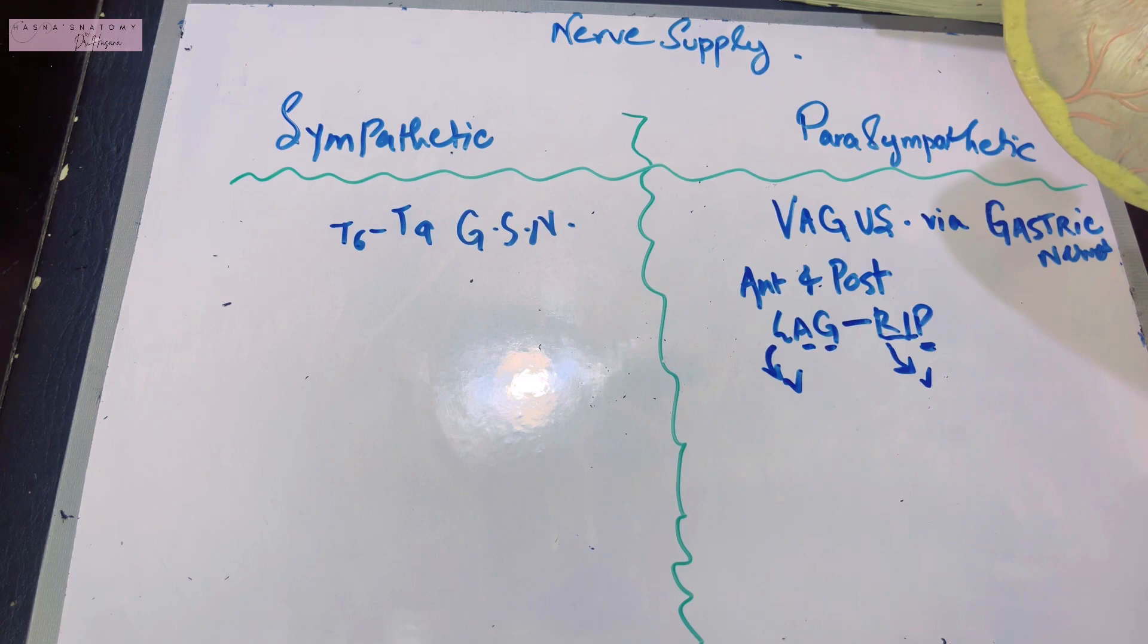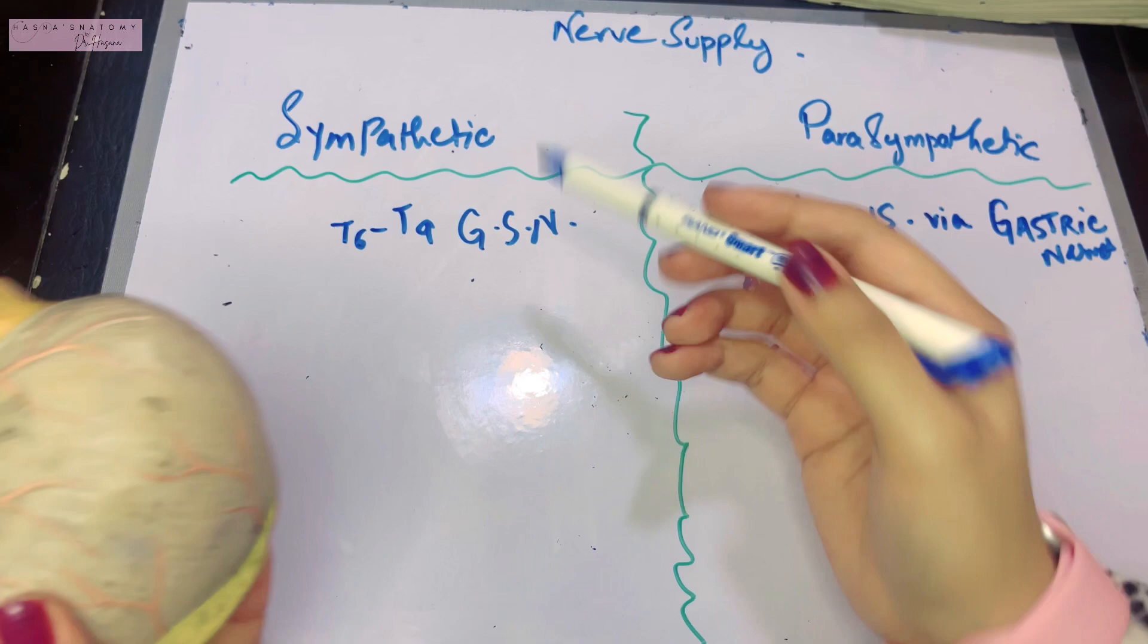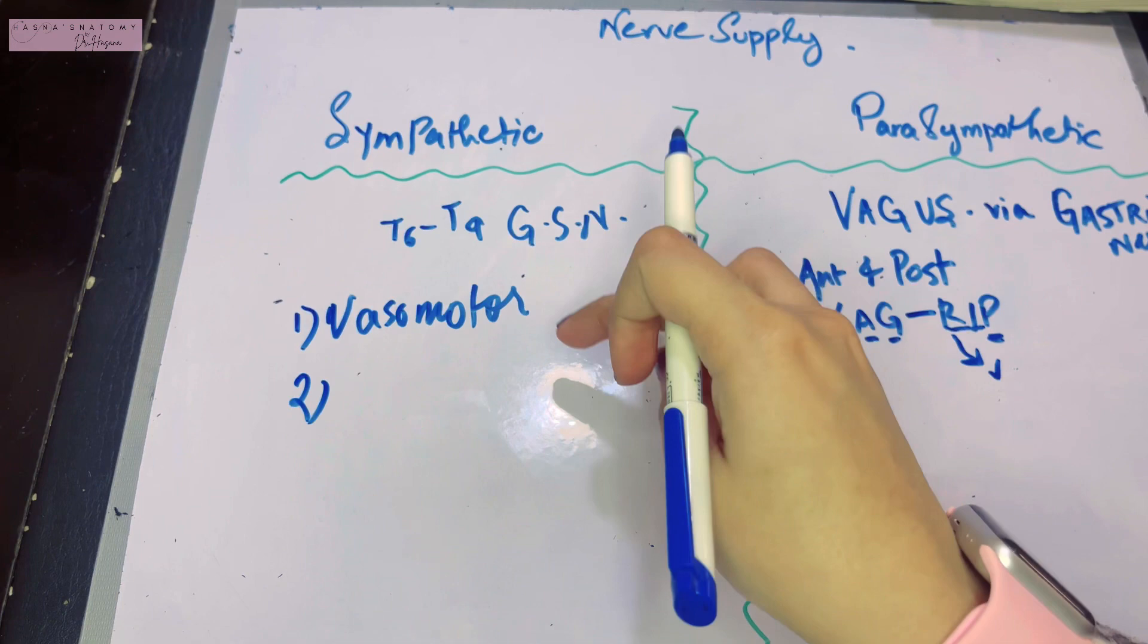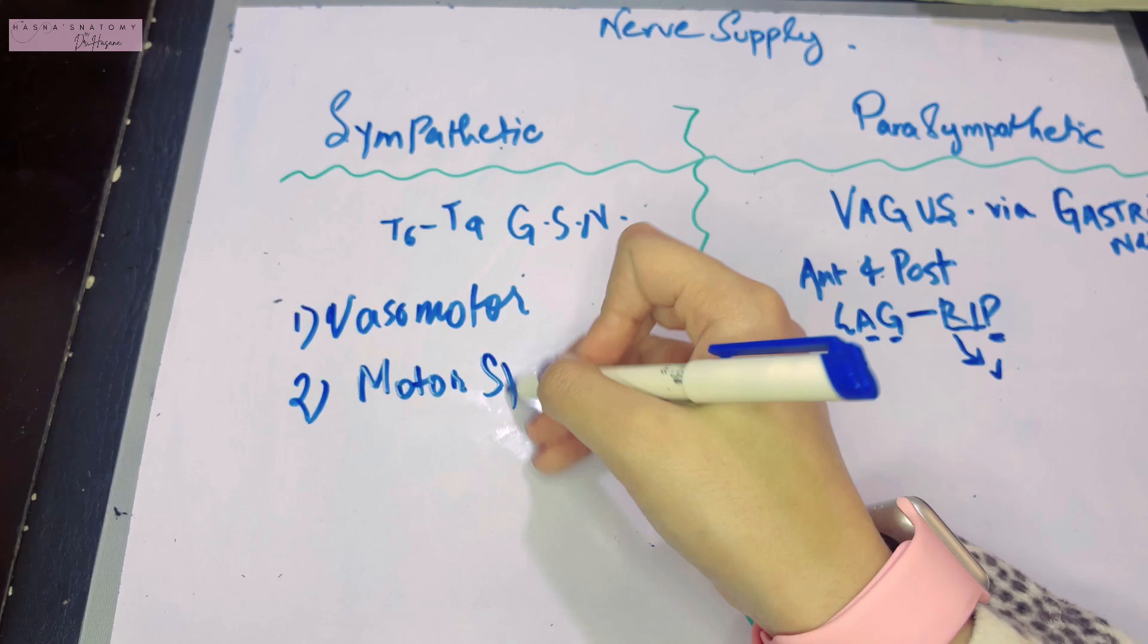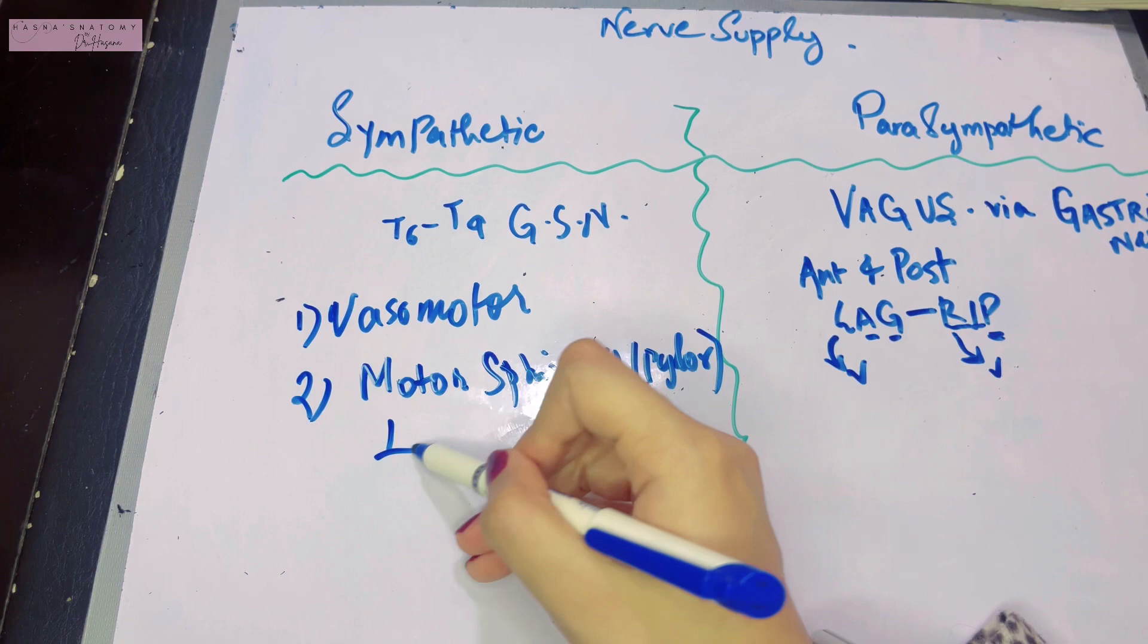Let's talk about the function of the sympathetic system. What happens when sympathetic stimulation is activated on the stomach? It is vasomotor which means it constricts the blood vessels. The second effect is that it is motor to the sphincters, which means it closes the sphincters, more specifically the pyloric sphincter, whereas to the rest of the gastric muscles this is inhibitory.